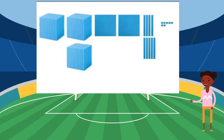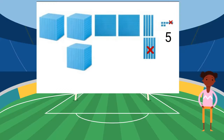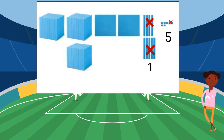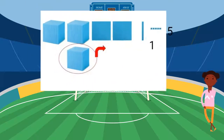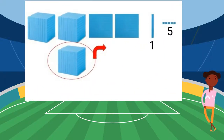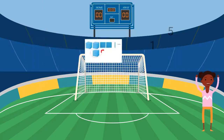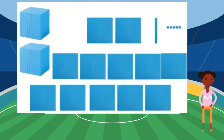I will use blocks to show the Rabbit fans. Next, I will take away the number of Turtle fans to find out how many more Rabbit fans there are. Seven ones take away two ones is five ones. Nine tens minus eight tens is one group of ten. There are two hundreds and I need to take away four. Do I have enough? No, I need to regroup my thousands. I can take a 1,000 cube and regroup it for ten hundreds.